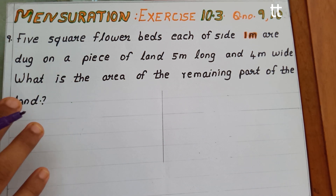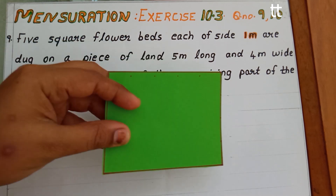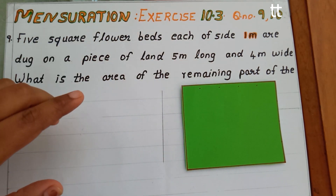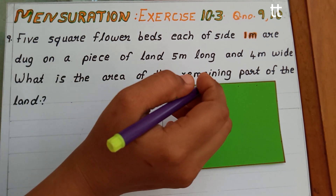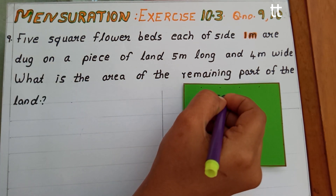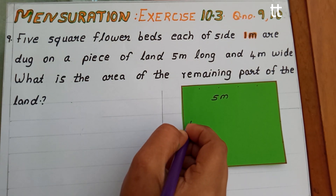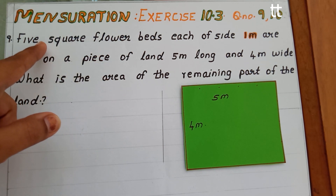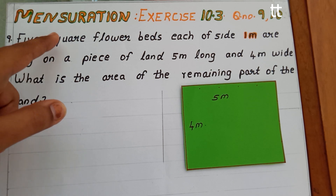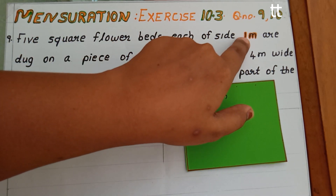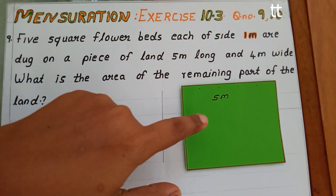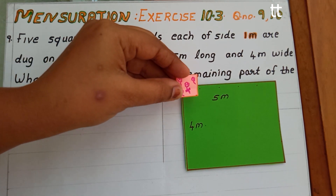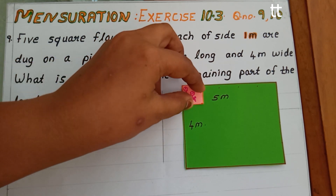After reading this question we should have a clear picture. I have drawn a pictorial representation of a piece of land. Its length is 5 meters and breadth is 4 meters. They have given one more piece of data: 5 square flower beds each of side 1 meter are dug on this land. I have drawn 5 square beds: